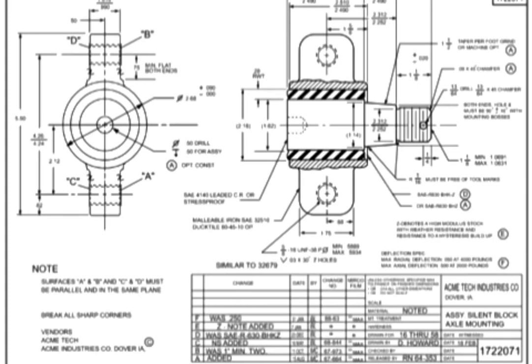Working assembly drawings combine detail drawings and assembly drawings. These drawings contain enough information to both create the subcomponents and assemble the finished product. Working assembly drawings show dimensions where required, as well as balloon identifiers to indicate each separate component part of the assembly. Working assembly drawings are ideal for smaller, simpler assemblies. Since they combine both detail and assembly characteristics, they can become complex very quickly.